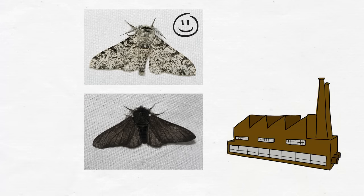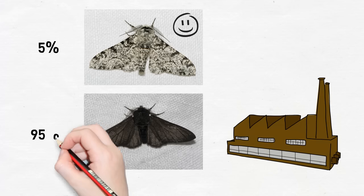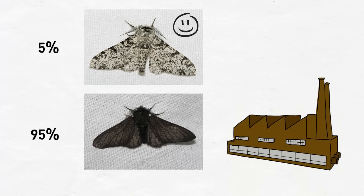By 1895, the dark peppered moths made up 95% of the population. That's quite a turnaround! The process of natural selection usually takes much longer, but this is a good example of how it works.